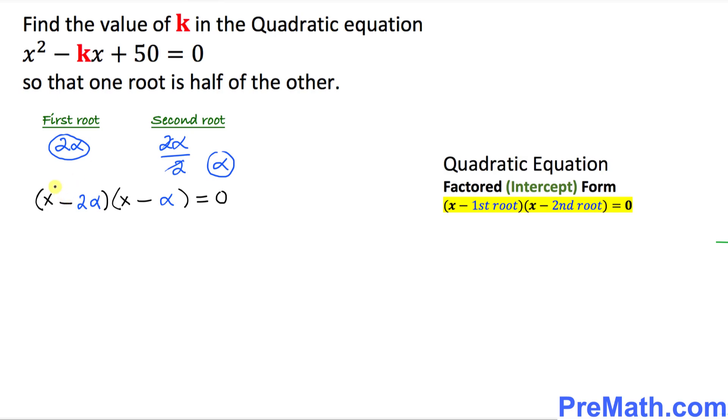The next thing is we're going to use the FOIL method. We're going to multiply x times x to get x squared. This times this gives minus alpha x, and this times this gives minus 2 alpha x. This times this gives positive 2 alpha squared equal to 0. These are like terms. We can combine them. I can write x squared minus 3 alpha x plus 2 alpha squared equal to 0.